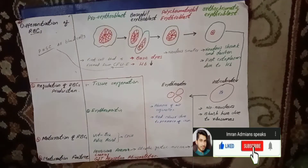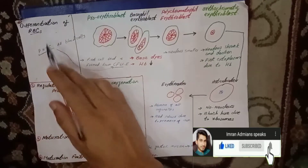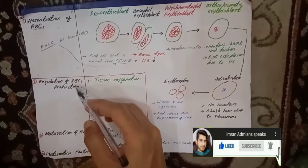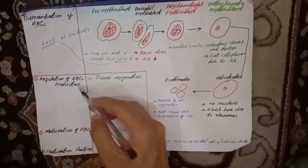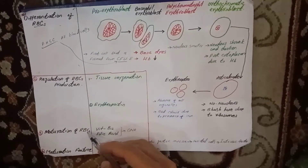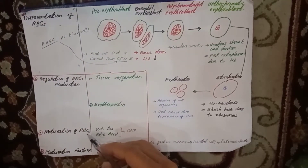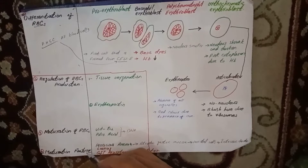We will discuss the differentiation of red blood cells, regulation of red blood cell production, maturation of red blood cells, and maturation failure.